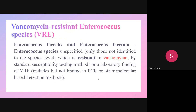Vancomycin-resistant Enterococcus (VRE): the Enterococcus species — namely Enterococcus faecalis and Enterococcus faecium — when vancomycin is shown to be resistant, the organism is known as vancomycin-resistant Enterococcus.